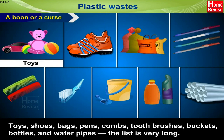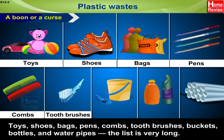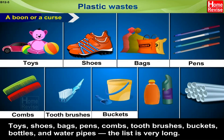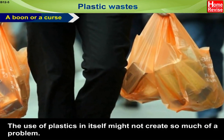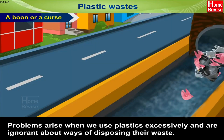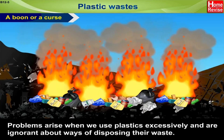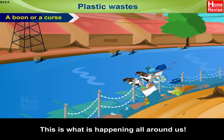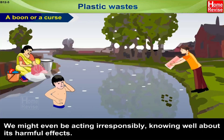Let us list a few things we use that are made of plastics: toys, shoes, bags, pens, combs, toothbrushes, buckets, bottles and water pipes — the list is very long. The use of plastics in itself might not create so much of a problem. Problems arise when we use plastics excessively and are ignorant about ways of disposing their waste. This is what is happening all around us. We might even be acting irresponsibly, knowing well about its harmful effects.